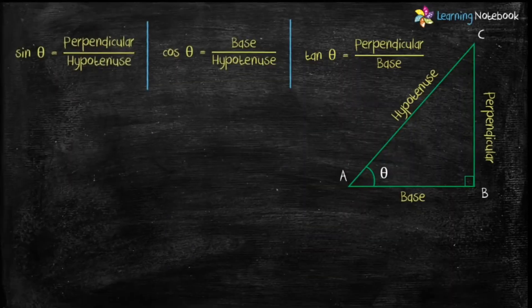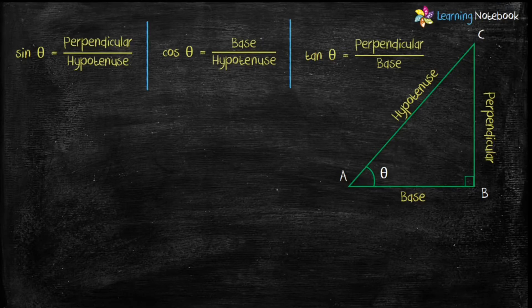In a given right-angle triangle, the trigonometric ratios for acute angle theta are: sine theta equals perpendicular upon hypotenuse, cos theta equals base upon hypotenuse, and tan theta equals perpendicular upon base.